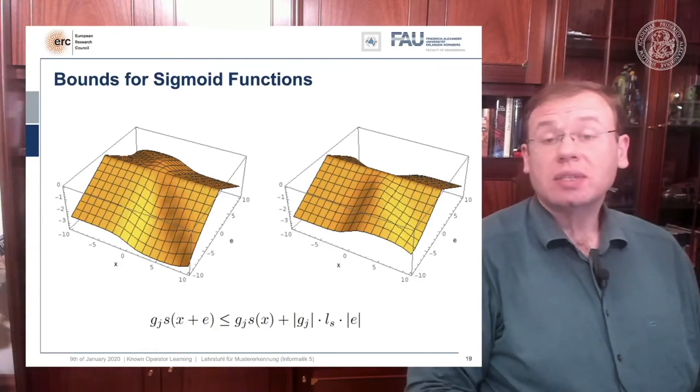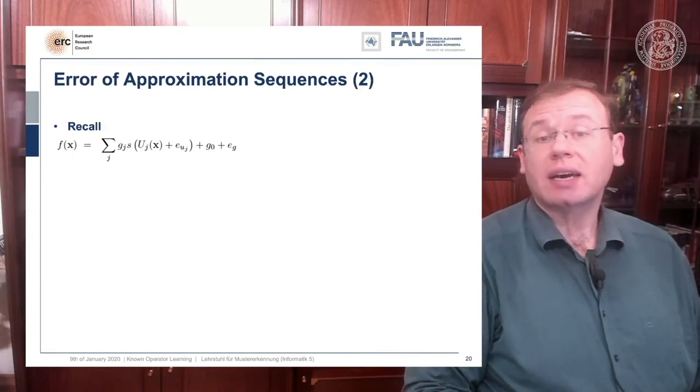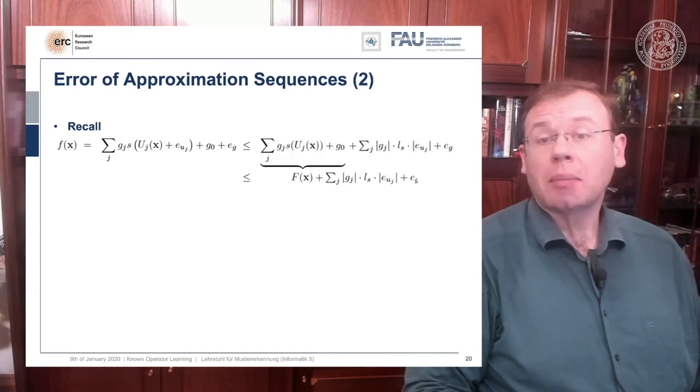And we can see now that we can finally get our e uj out of the bracket, out of the sigmoid function, and we get an upper bound by using this kind of approximation. And then we can see if we arrange the terms correctly that the first couple of terms are simply the definition of capital f of x.